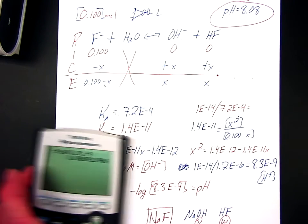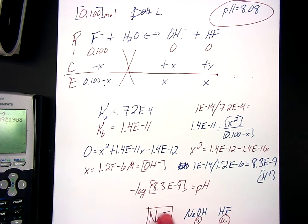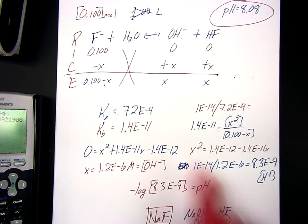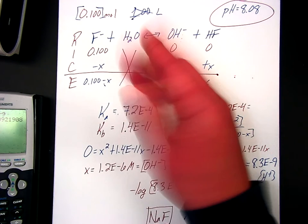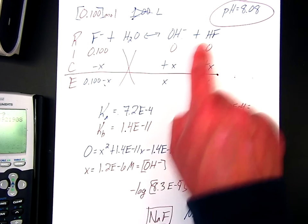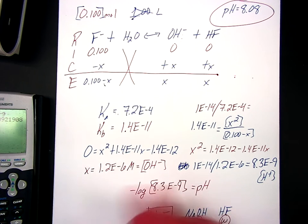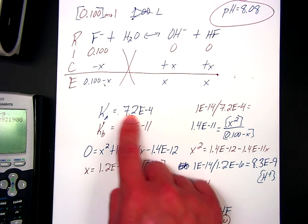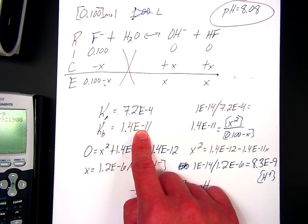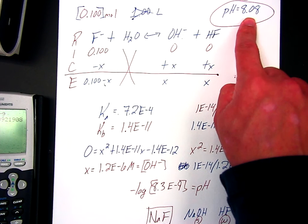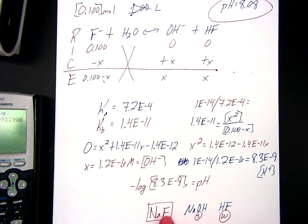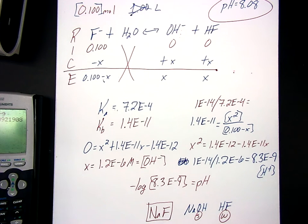So again, if you choose any of the other salts instead of NaF, you'll have to go strong weak, and then most of the rice table will be identical. Even what you put there doesn't matter. It's the KA that matters. Because if you choose a different salt, it'll give you a different KA, which in turn will give you a different KB, which when you go through the work will not hit 8.08. Only sodium fluoride does that.